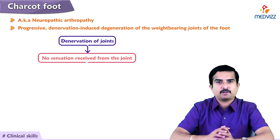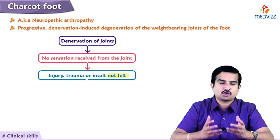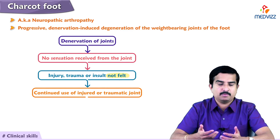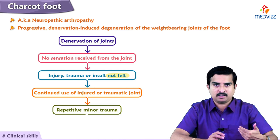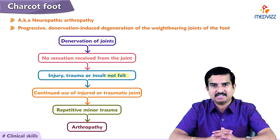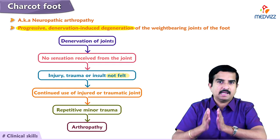If you are not receiving any signals from that particular joint and there is an injury or trauma or insult to the joint, you don't know that there is an insult. You still use the joint normally because you are not receiving any pain signals. Because of that, repetitive minor trauma to those denervated joints will progressively lead to a stage called arthropathy. That is why we call this condition progressive denervation-induced degeneration.